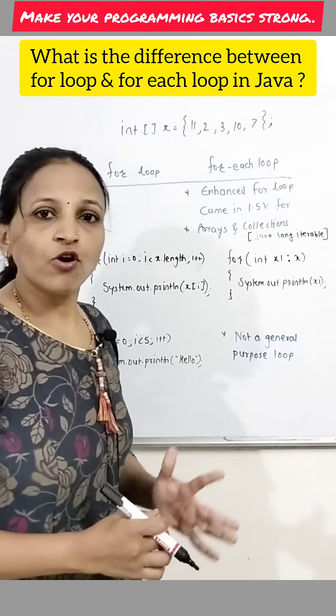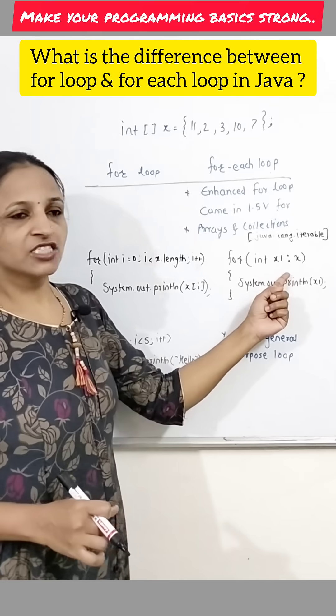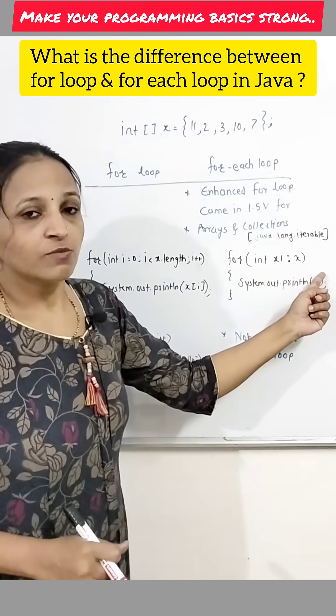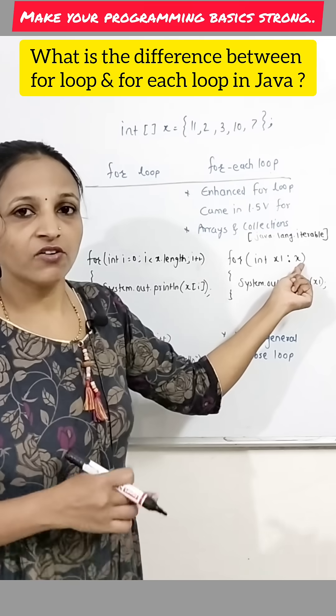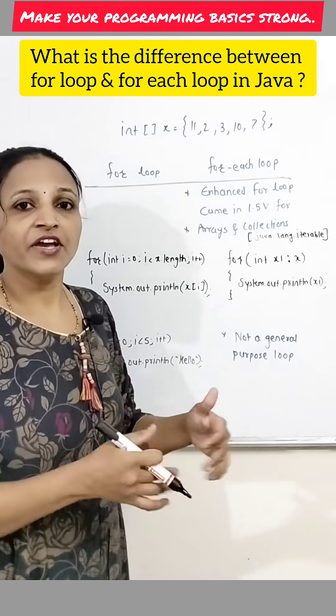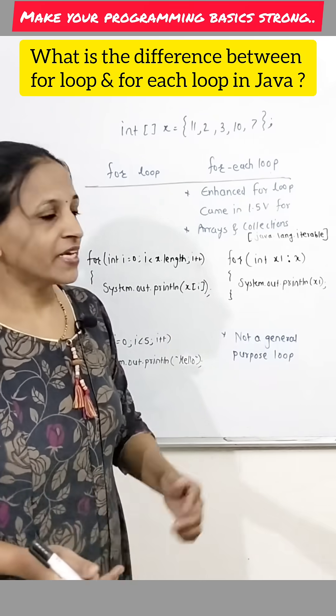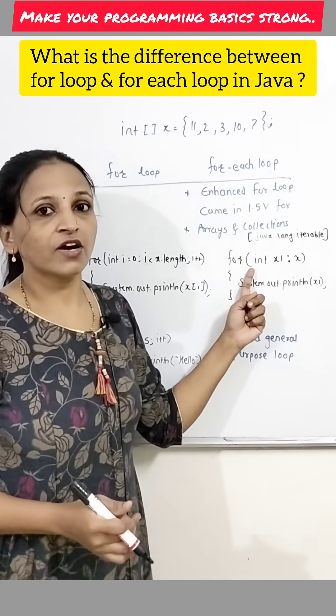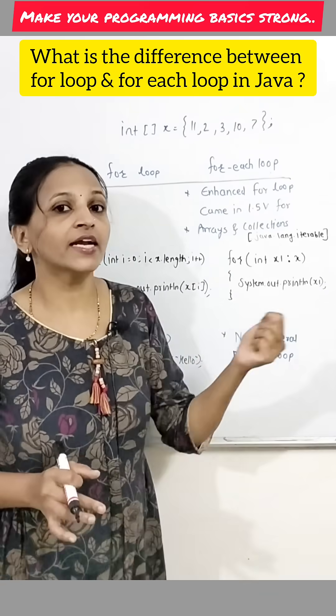Let instead of that, I want to use for each loop. Then how we can use like for int X1 colon X means for each value of X1 from this X array. Here one by one, all the elements of that X1 array will be fetched and stored inside X1. And those we can display here.